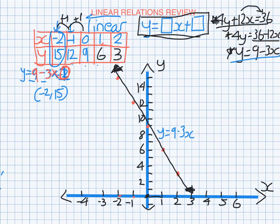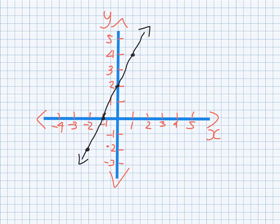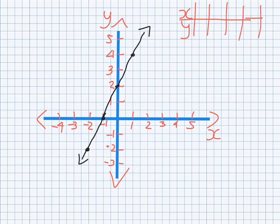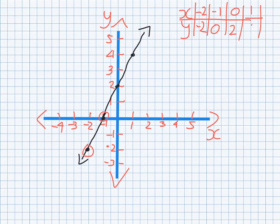Now let's look at the second thing you need to know, which is: when you have a graph or table of values, how you come up with the equation. So let's try and find the equation of this line in black. What I'm going to do is draw up a table of values, but the points will already be there for me. I've got an x-coordinate and a y-coordinate. The first point, starting with the leftmost point, is x is minus 2, y is minus 2. The next point: x is minus 1, y is 0, and so on.